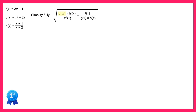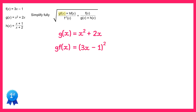We're told g of x in the question — that's x squared plus 2x. To do g of f of x, we're going to replace all of the x's in the g function with whatever the f function was, and that's 3x minus 1. So instead of x squared it will be 3x minus 1, all squared, and instead of plus 2x it's 2 lots of 3x minus 1.